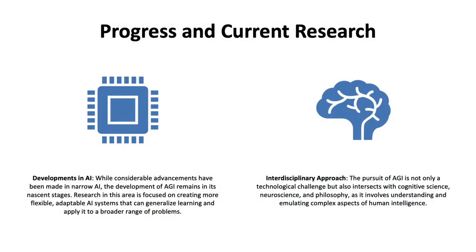Progress and current research. Significant progress has been made in the domain of narrow AI, which is specialized for specific tasks. However, the development of AGI is still in the early stages. The research is currently directed towards devising AI systems that are flexible and adaptable, capable of generalizing learning to address a wide variety of problems. Achieving AGI is a multidisciplinary effort entailing challenges that span technology, cognitive science, neuroscience, and philosophy, and it requires a deep understanding and replication of the intricate facets of human intelligence.